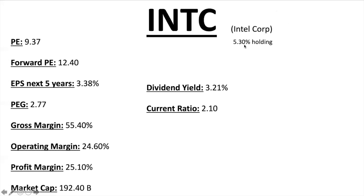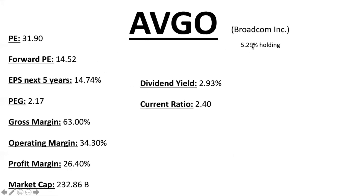Intel Corp has a 5.3% holding in SMH. PE ratio 9.37 — nice and low. Forward PE 12.4 — higher than the PE, meaning next year's earnings aren't projected to be as good. PEG ratio 2.77 — quite high, not a lot of growth in the next five years, likely because they're building a factory in Ohio. Gross margin over 50%, operating margin just under 25%, profit margin 25% — fantastic. Market cap $192 billion, dividend 3.2%, current ratio 2.10.